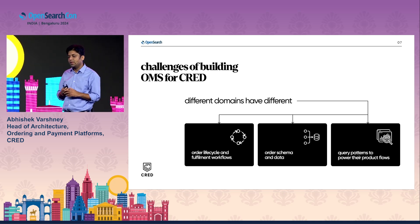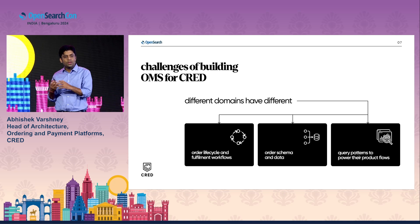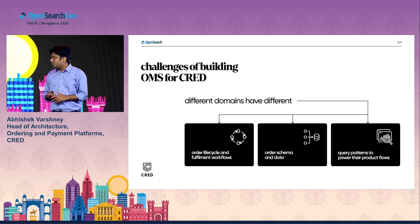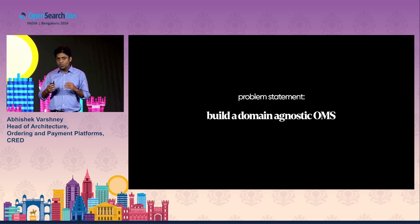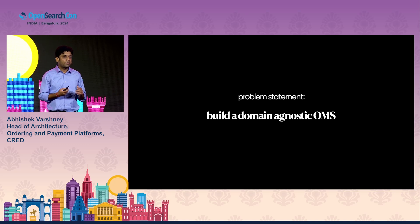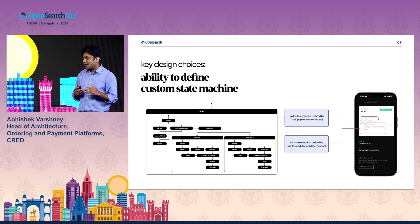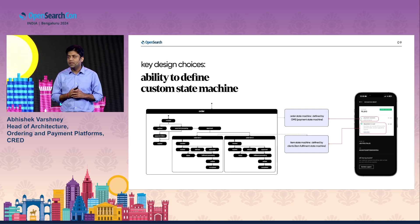The third problem statement was to power different product flows depending on the custom data captured. This ultimately boiled down to: how do we build a domain agnostic order management system? Quickly summarizing our approach to solving this problem and some of the key design decisions that we took.